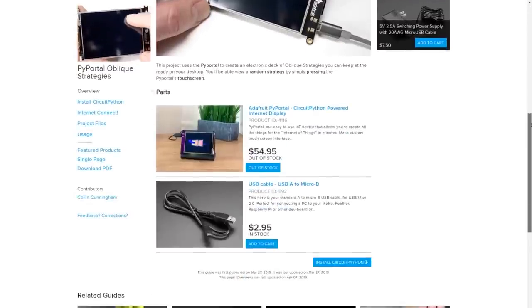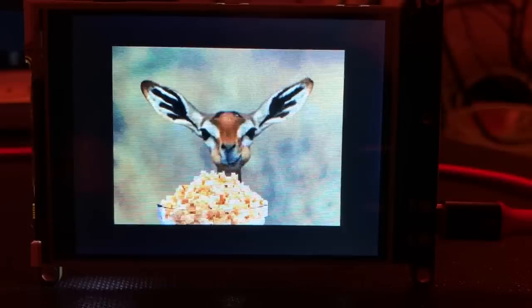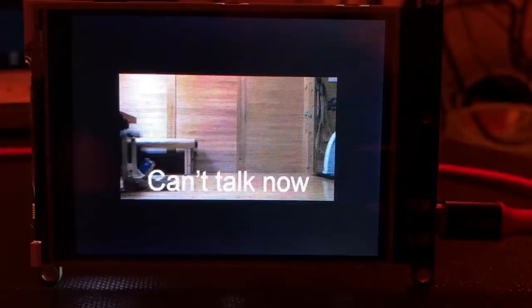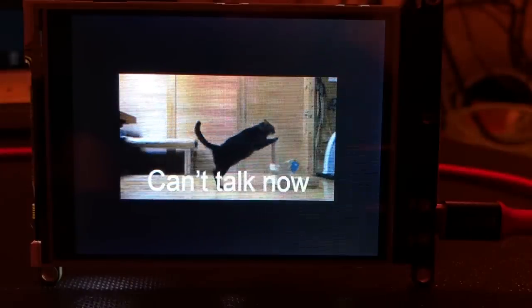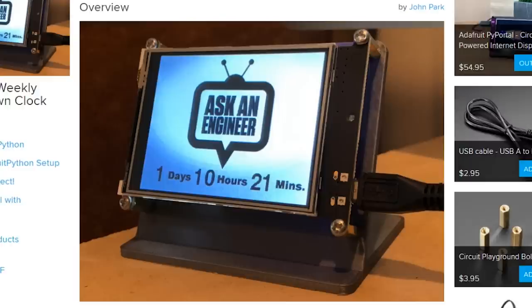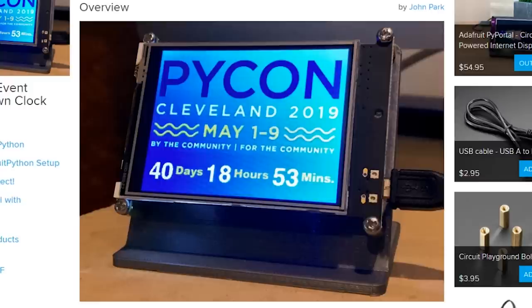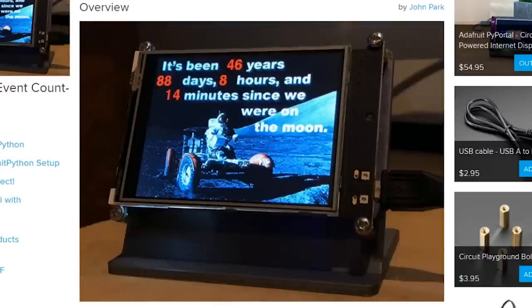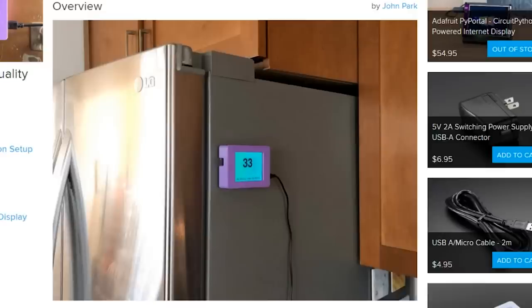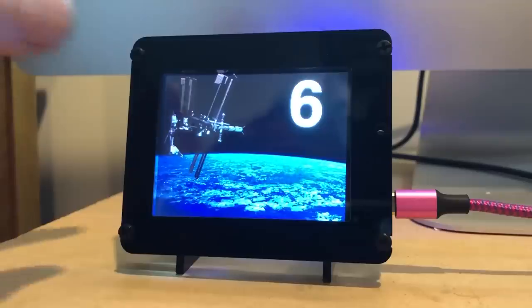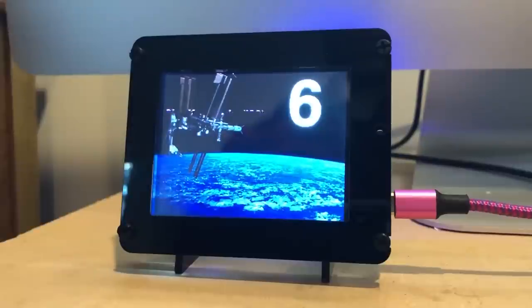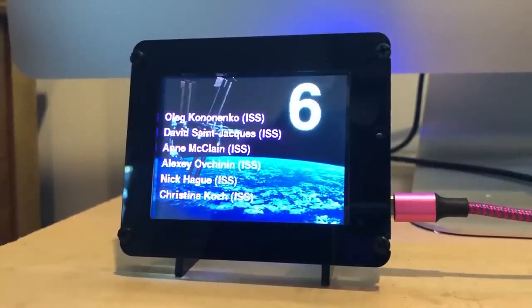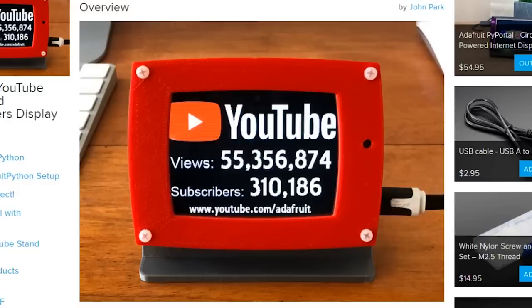And that's just the tip of the iceberg in terms of Pi Portal projects this month. Lady Ada herself made a guide on how to load up a Pi Portal with an animated GIF. John Park shows how to use one as a weekly countdown clock or a single event countdown clock, or a count-up clock to mark a special occasion. John also has a project using a Pi Portal to display local air quality, or the number of astronauts currently in space, which is one of my favorites, or the number of views and subscribers on a YouTube channel.